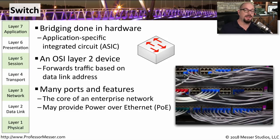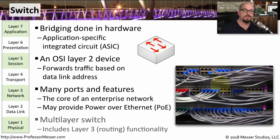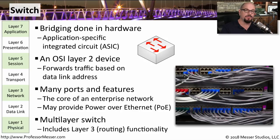Modern switches also have a number of additional features. One good example is power over ethernet, where you can plug in a device that requires power and it can receive that power directly from the network switch. Some switches also include the option to enable routing functionality within the same chassis. We call this multi-layer switching, or a layer 3 switch — because one portion performs normal Layer 2 switching, while another portion routes between the different VLANs connected to that switch.